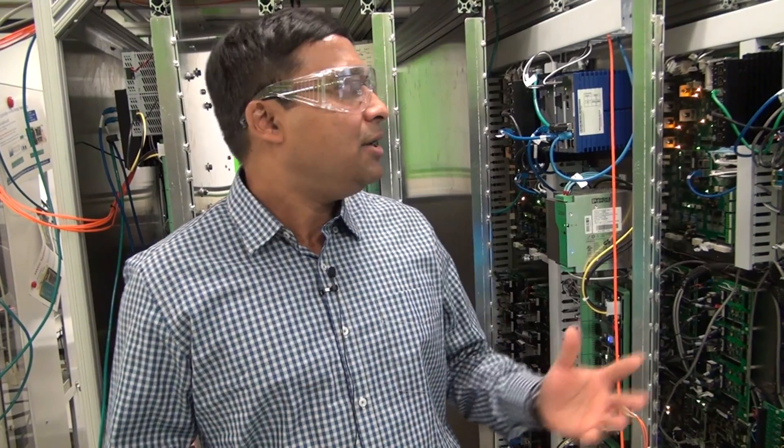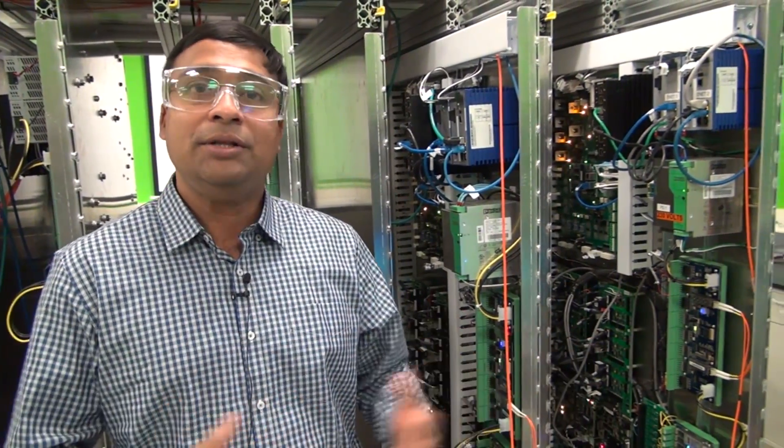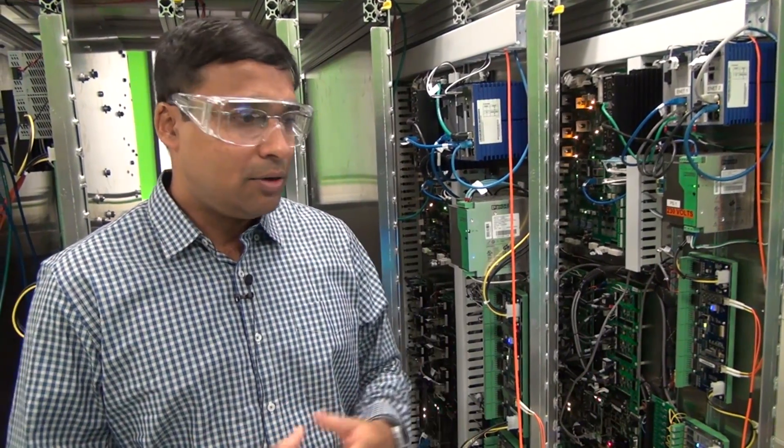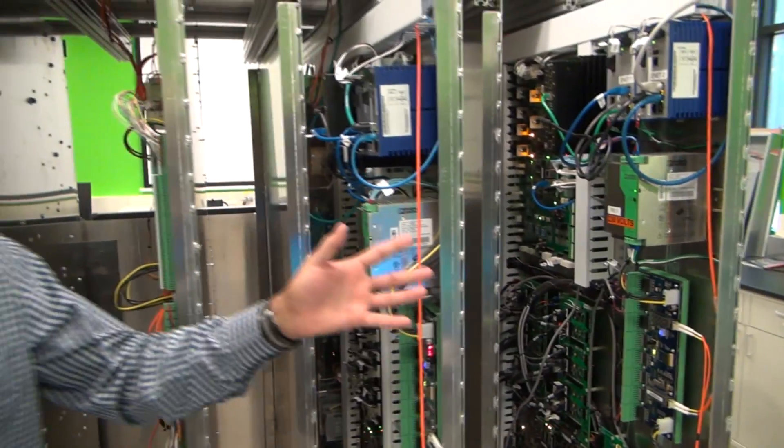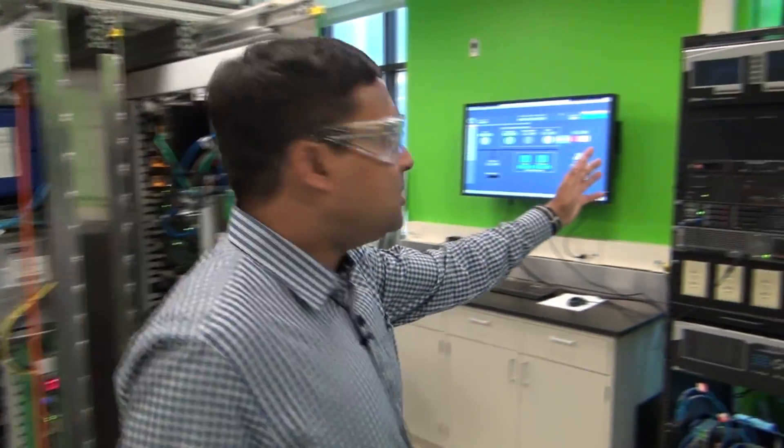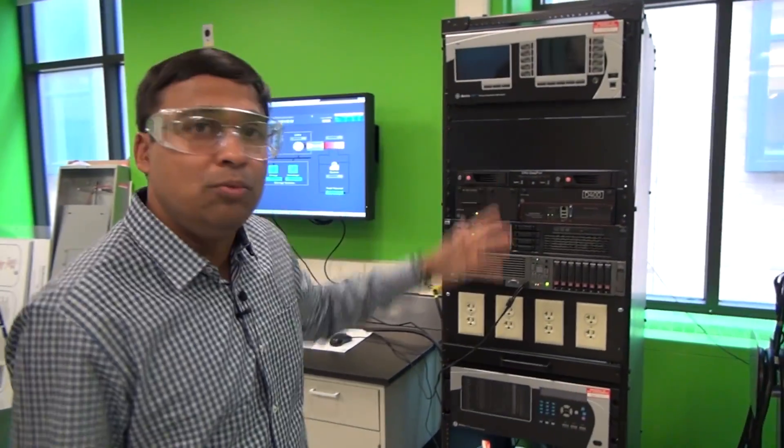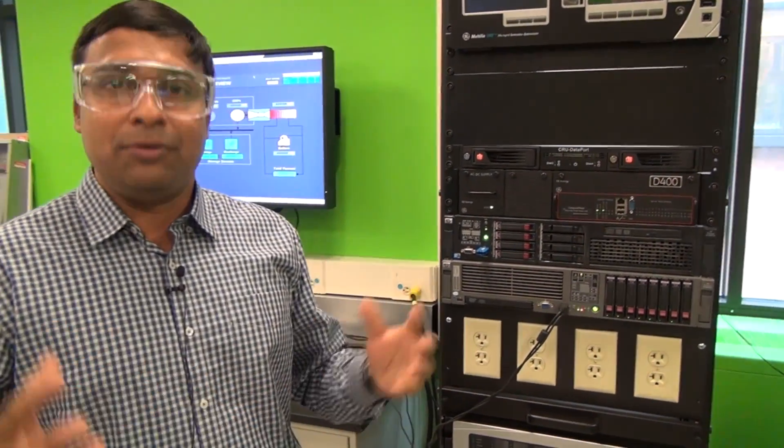So what you see here is, for example, some of the control platforms that we use for controlling these renewable assets like wind, solar, or storage. We will use some of these control platforms that you see here, as well as some of the other platforms that you see on this side of the lab, to provide grid efficiency and grid reliability for microgrids.